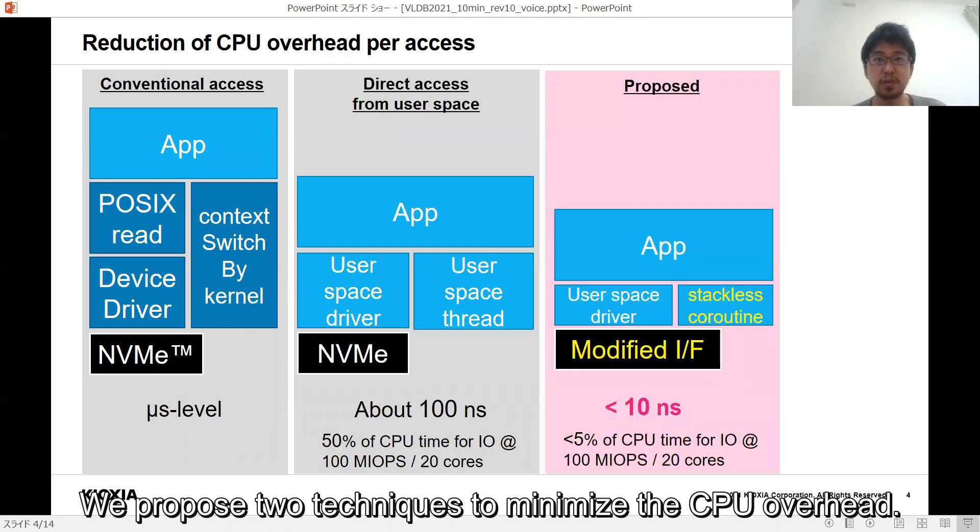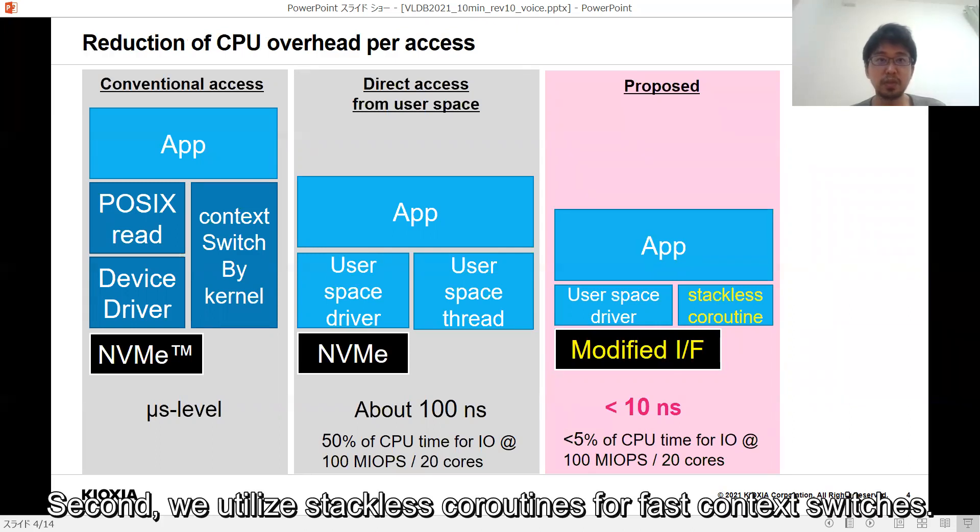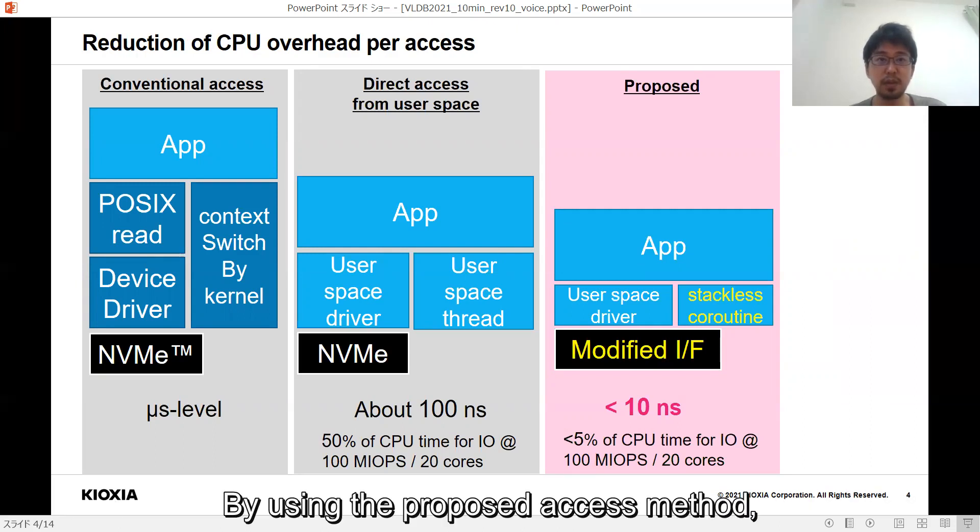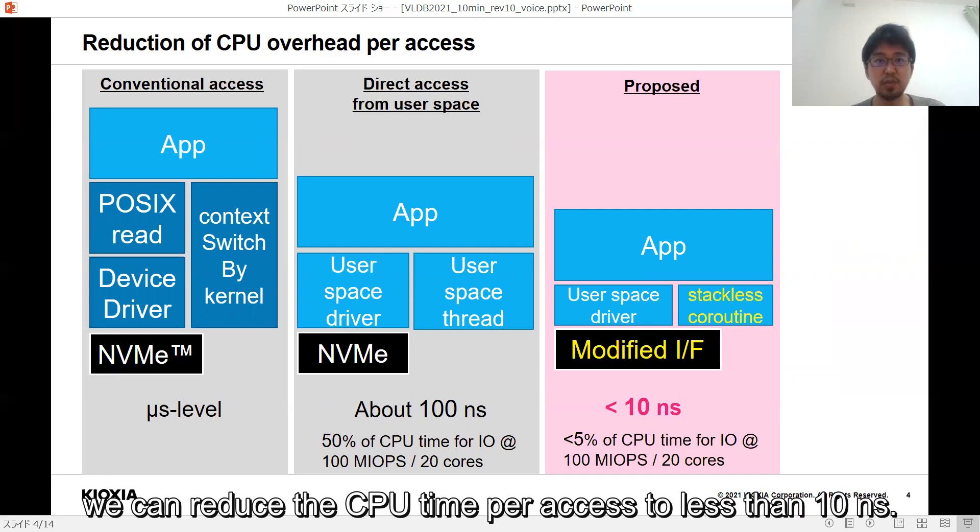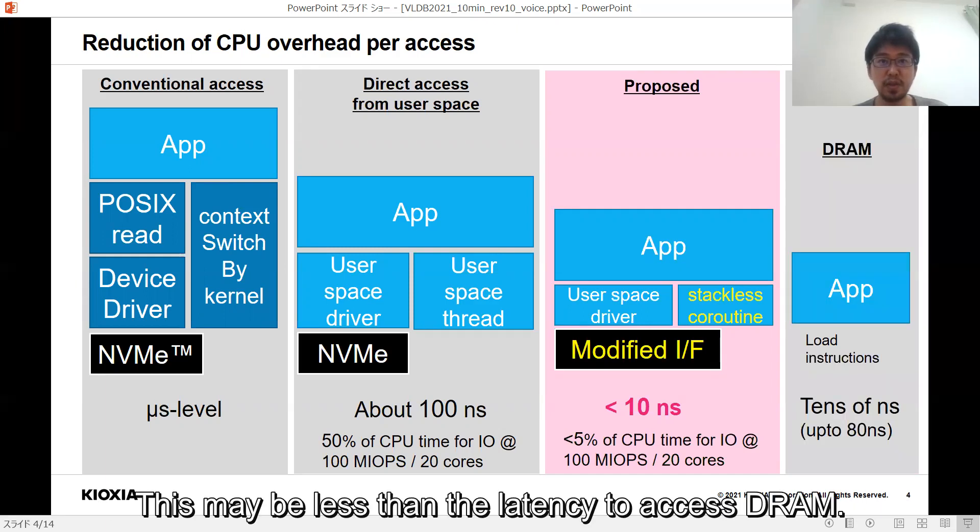We propose two techniques to minimize the CPU overhead. First, we modify the NVMe protocol. Second, we utilize the stackless coroutines for fast context switches. By using the proposed access method, we can reduce the CPU time per access to less than 10 nanoseconds. This may be less than the latency to access DRAM.